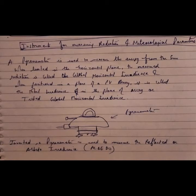A pyranometer is an instrument which is used to measure the energy from the Sun. When leveled in the horizontal plane, the major radiation is called global horizontal irradiation or global horizontal radiation. And when positioned in a plane of